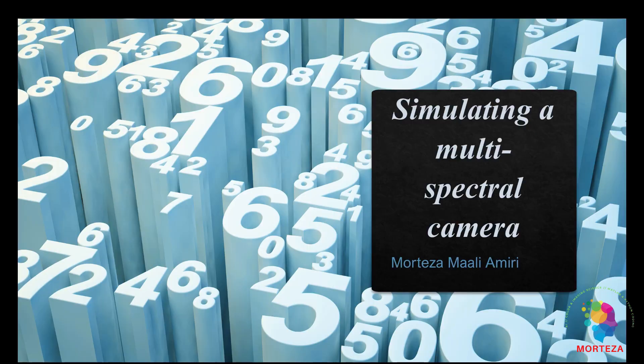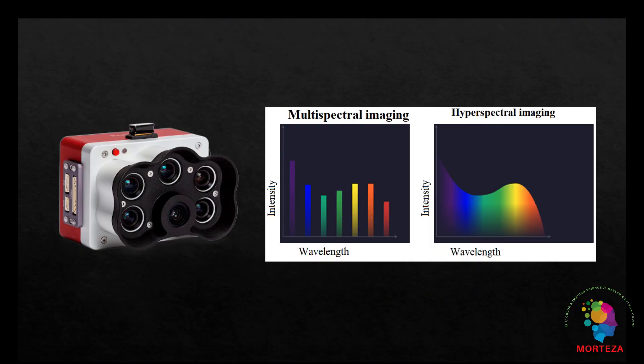Today I'm going to talk about simulating a multi-spectral camera in MATLAB. We're going to talk about a very simple multi-spectral camera system, and I'll make an attempt to simulate how these cameras capture any image. A multi-spectral camera captures images of an object at a few bands across the spectrum, and as you can see here, these are the bands that this multi-spectral imaging system can capture.